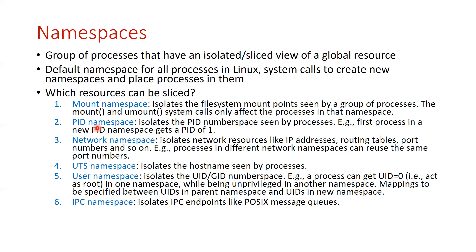The next thing you can do is isolate the PID namespace. You can place processes into a separate PID namespace and they will see only each other, with PIDs 1, 2, 3 and so on, without seeing all other processes in the system. Similarly, you can isolate the network namespace. If you put processes in an isolated network namespace, they will only see each other. Normally two servers cannot listen on the same port number, but if you place them in separate network namespaces, they are isolated and you can reuse the same port number.